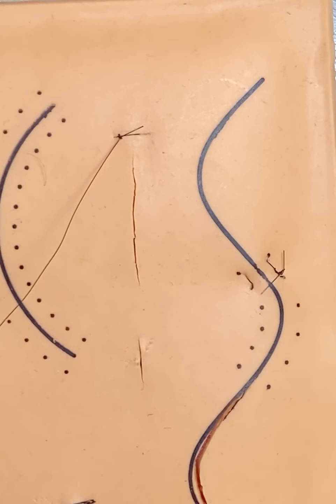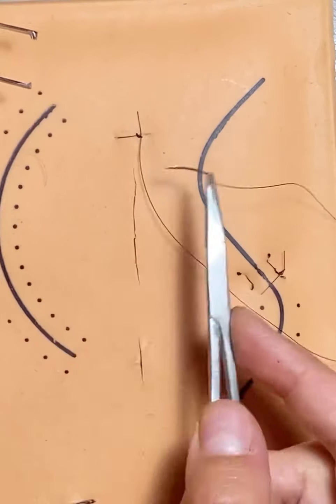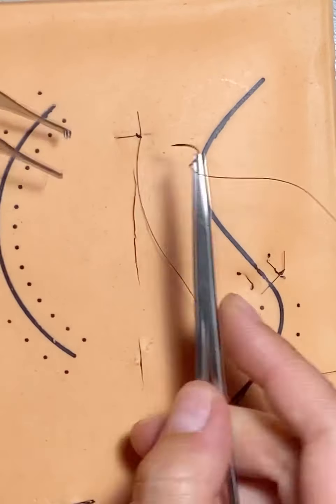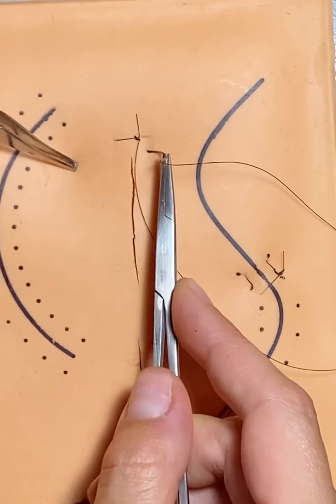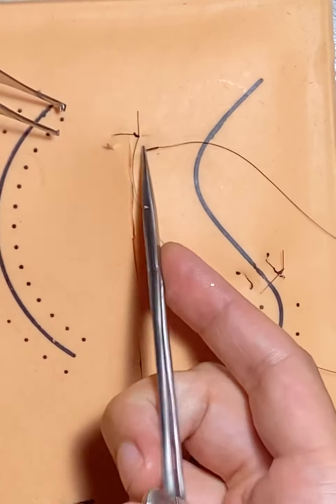What we're going to do next is the same thing. You're just going to keep doing simple interrupted stitches, about two per centimeter generally speaking. This will look nicer if they're all the same distance from the wound edge.